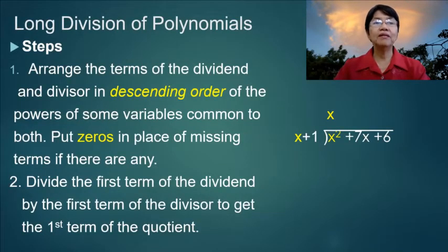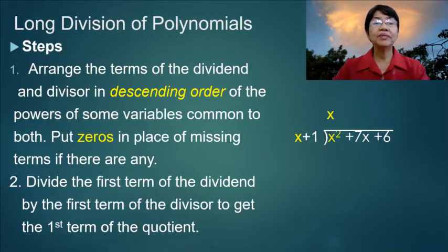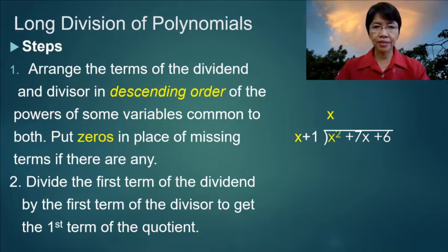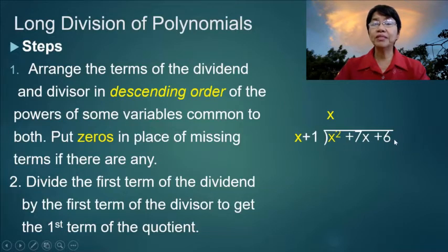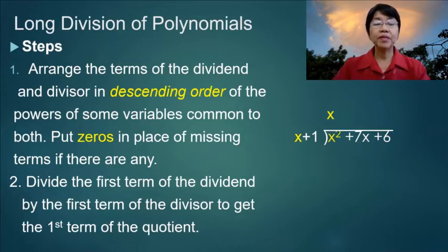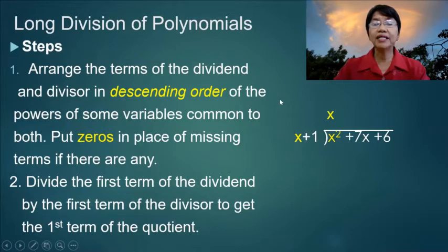Now let's go to the long division of polynomials proper. Here are the steps. First, we arrange the terms of the dividend and the divisor in descending order of the powers of some variable common to both. Put zeros in place of missing terms if there are any. Step two: divide the first term of the dividend — in this case x squared — by the first term of the divisor to get the first term of the quotient. So x squared divided by x equals x.